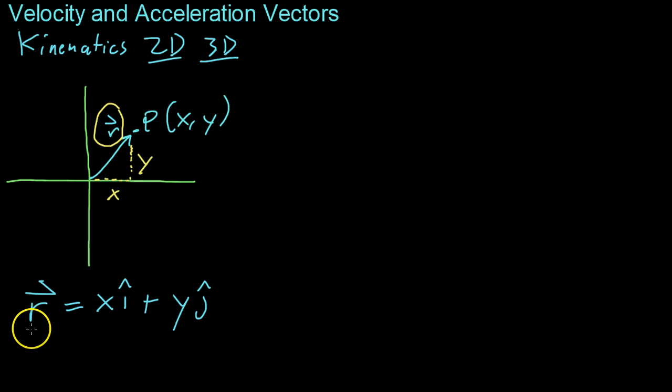And so naturally, you can write that vector R as X times the X unit vector i plus Y times the j unit vector.